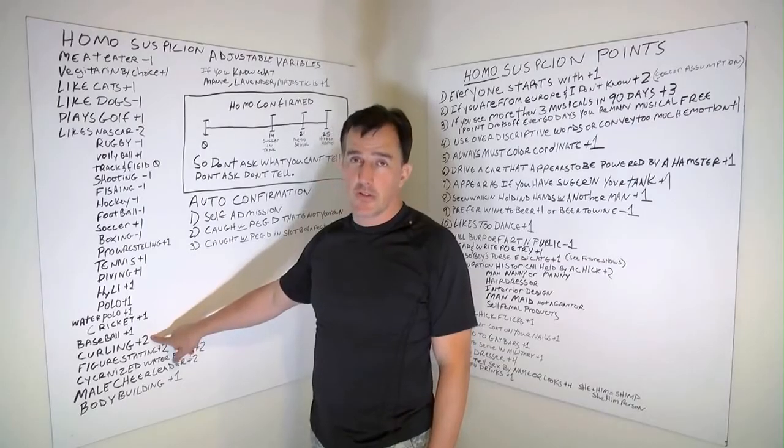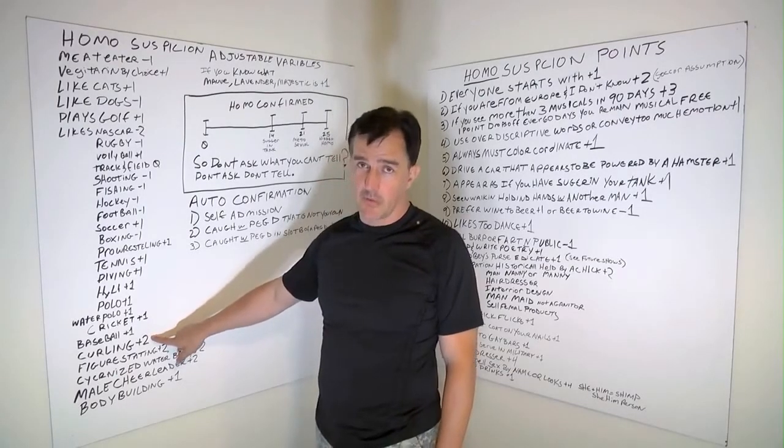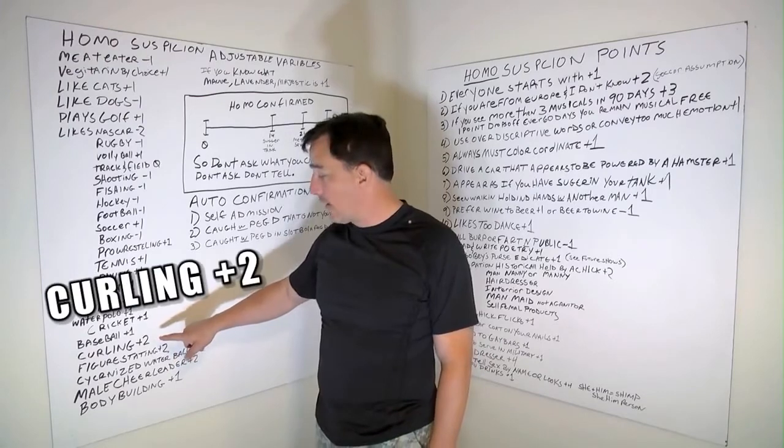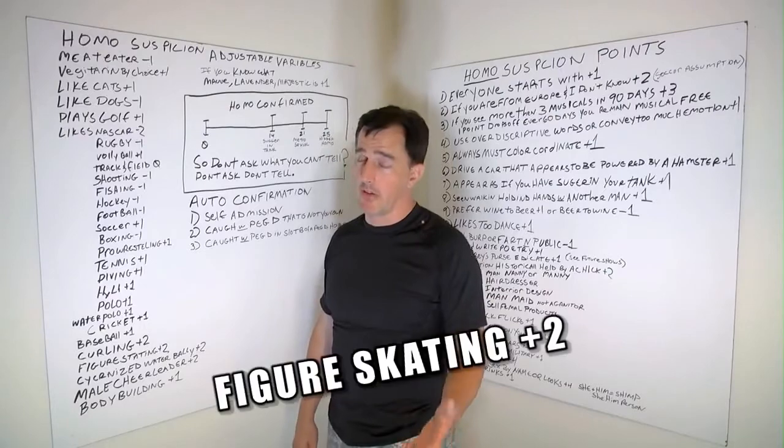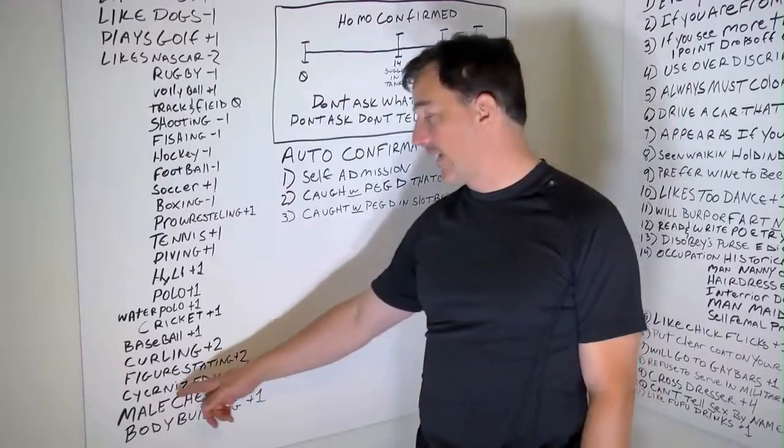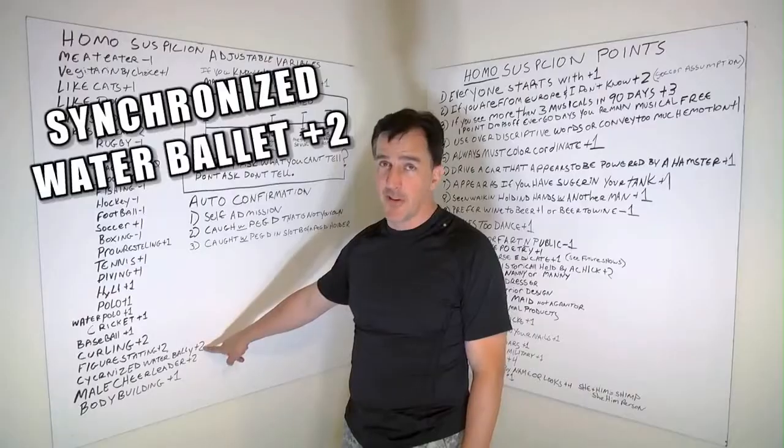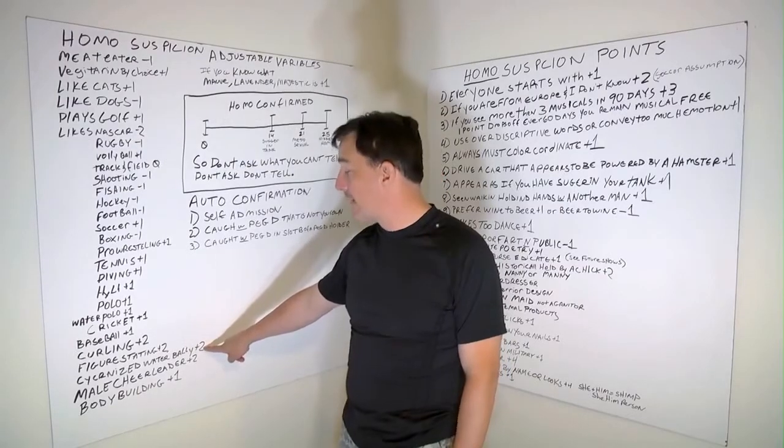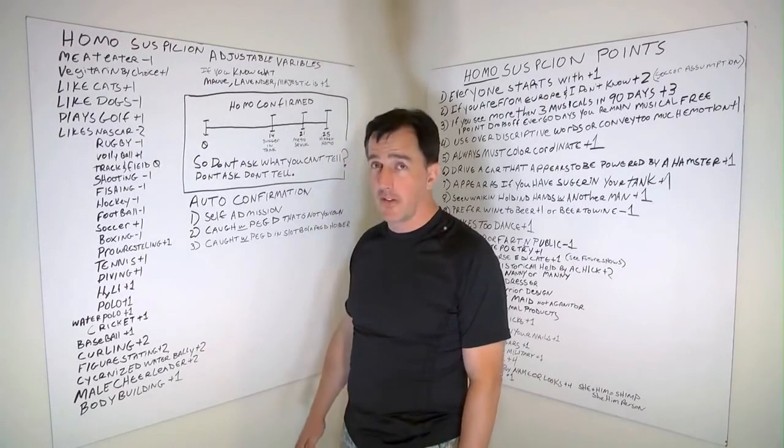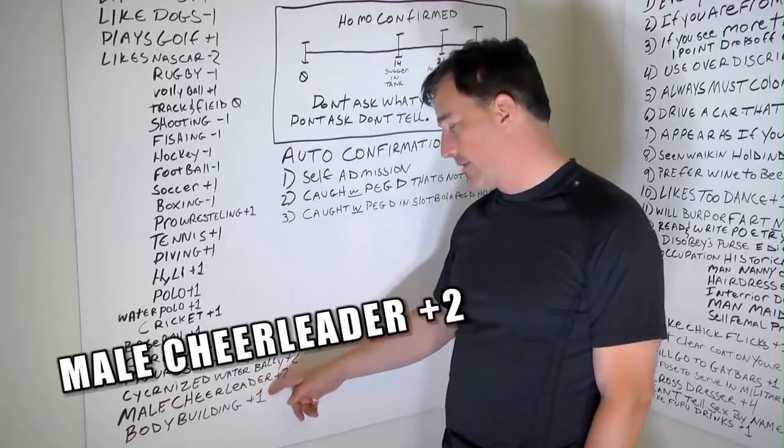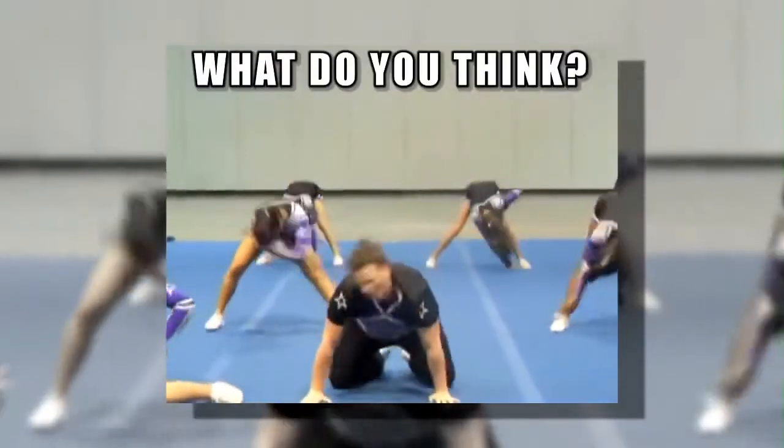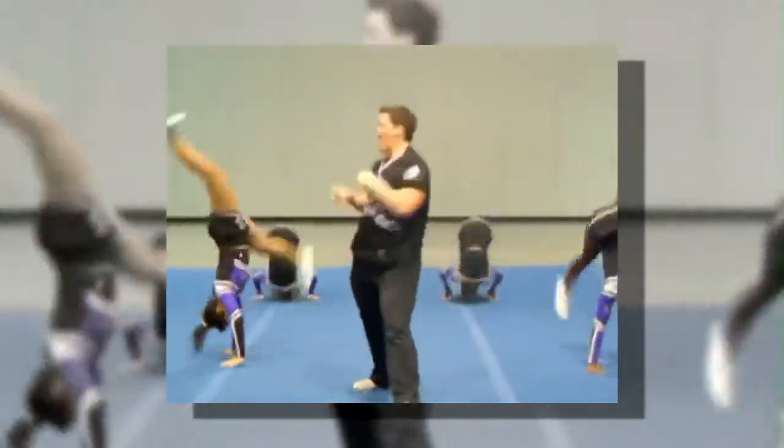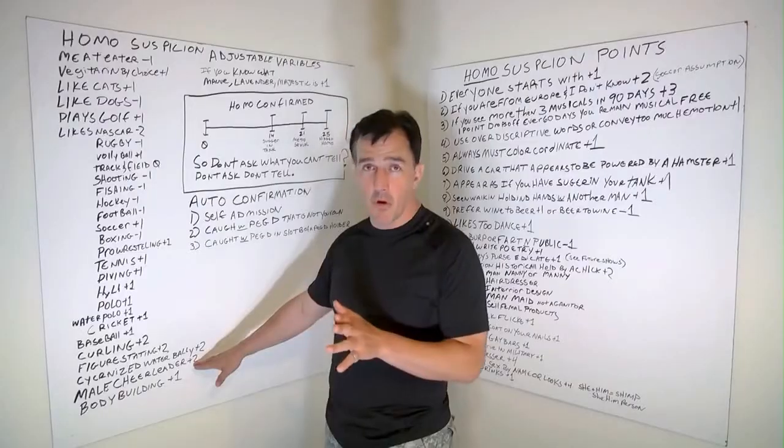All right, now curling, I've watched this mind-numbing exercise on TV when there's nothing else. And that is about as gay as a $2 bill right there. So you get two. Figure skating. Here, going over the edge of that songs. That's plus two right there. Synchronized water ballet. That's plus two right there. I mean, that is some crazy, crazy gay stuff. Male cheerleaders. Plus two. That's just my opinion. Maybe I'm wrong. I don't know.